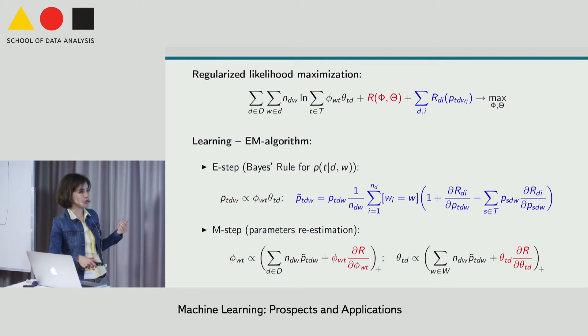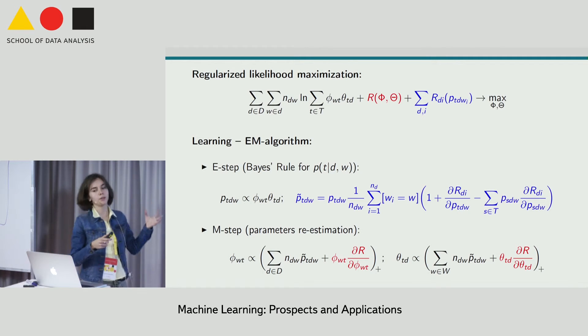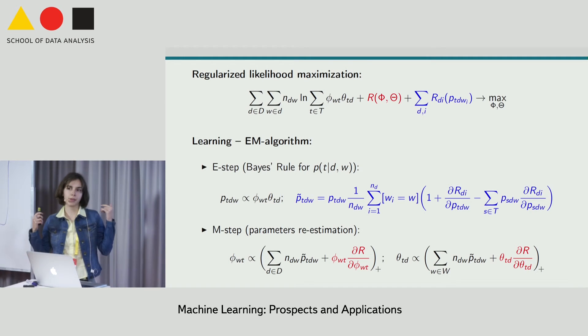These red modifications correspond to the additive regularization approach. I'm not going to go deep into the details. Konstantin Vorontsov will have some details about this approach in his talk. But I'll just say that it is a framework to combine many extensions of topic models into one topic by adding additional criteria here and modifying the M-step. And the contribution of this work is to overcome bag of words limitations in this framework.